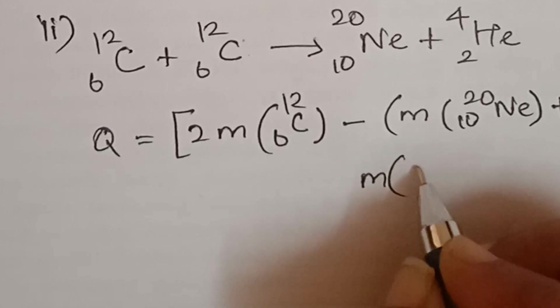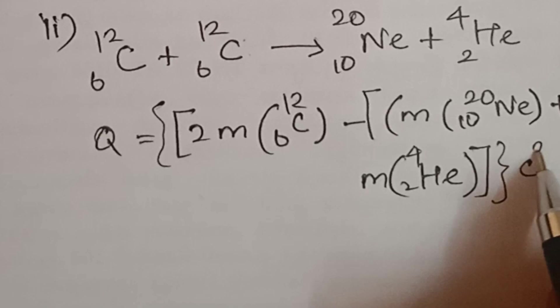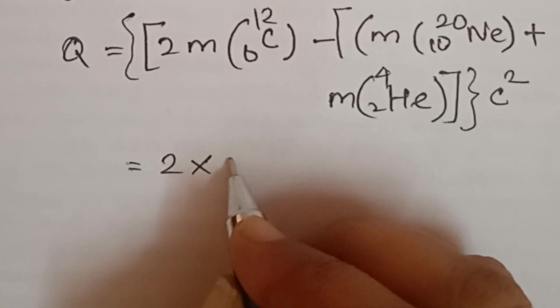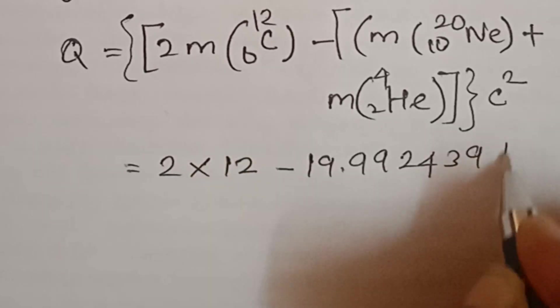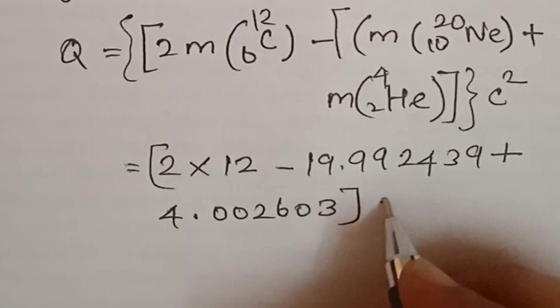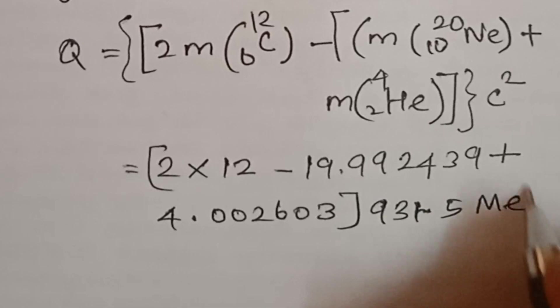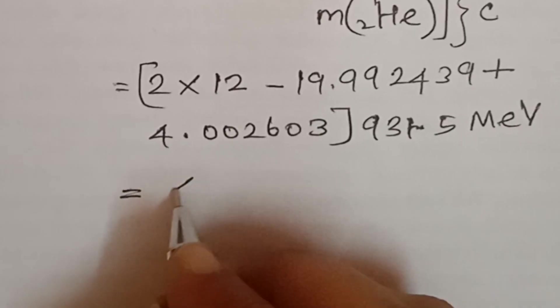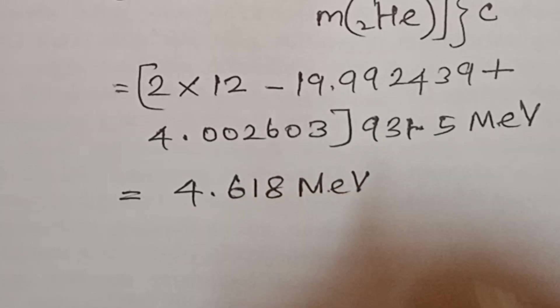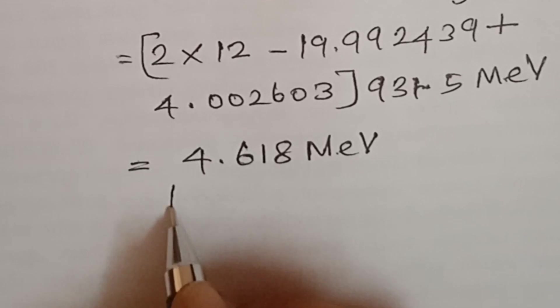So this equals 2 into 12 minus 19.992439 plus 4.002608, times 931.5 MeV, which equals 4.618 MeV. This positive sign indicates an exothermic reaction.